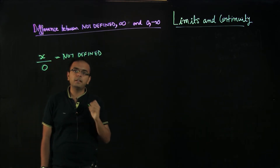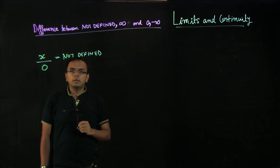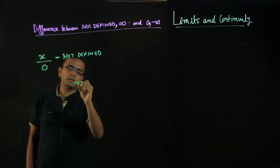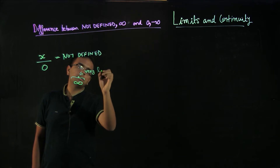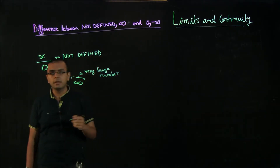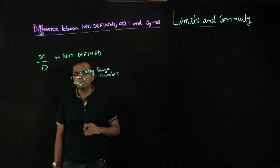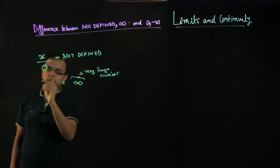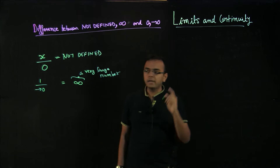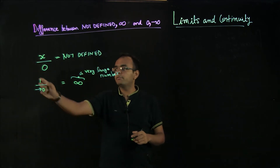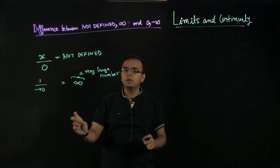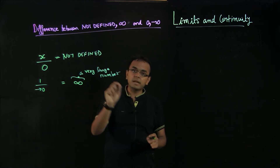Why people get confused between not defined and infinity is that infinity means a very large number, and minus infinity would mean a very large negative number. People get confused between these two because if I have 1 and I have approaching 0 in the denominator — and not exactly 0, that is the difference. If you have 1 by 0 that is not defined, but 1 by approaching 0 means the value is infinitely small, and hence that number would be really large — that is why it is infinity.